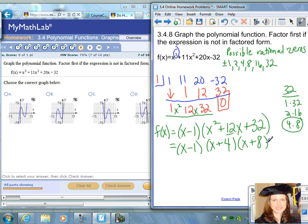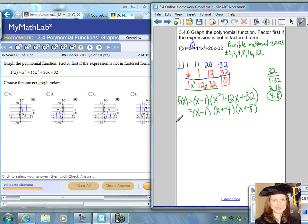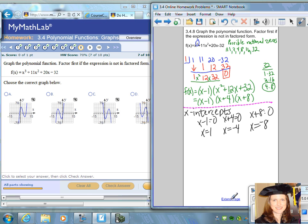Using those factors, set each equal to 0 to find the x-intercepts. If we set x - 1 equal to 0, you get x = 1 is an x-intercept. Set x + 4 equal to 0, x = -4 is an x-intercept. Set x + 8 equal to 0, then x = -8 is an x-intercept. Those are three points on the graph where the graph crosses through the x-axis: at positive 1, at negative 4, and at negative 8.